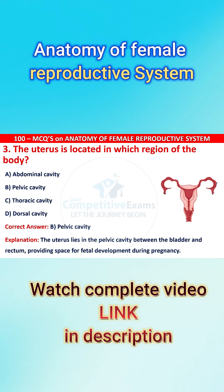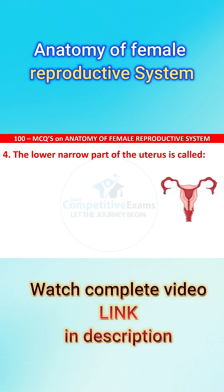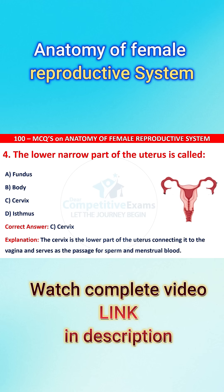Question four: The lower narrow part of the uterus is called as fundus, body, cervix, or isthmus. The correct answer is C, i.e., cervix. The cervix is the lower part of the uterus connecting it to the vagina, and serves as a passage for sperm and menstrual blood.